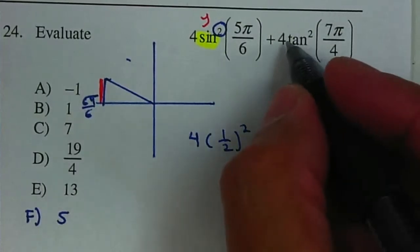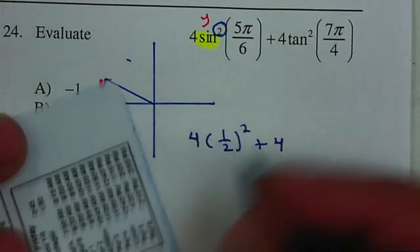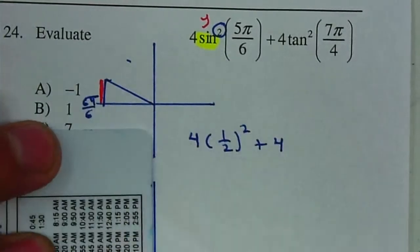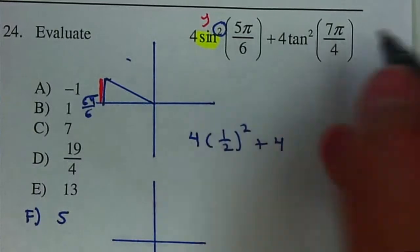I need to evaluate the tangent of 7 pi over 4. So once again I'm going to draw my x and my y axis. And I need to locate where 7 pi over 4 is.